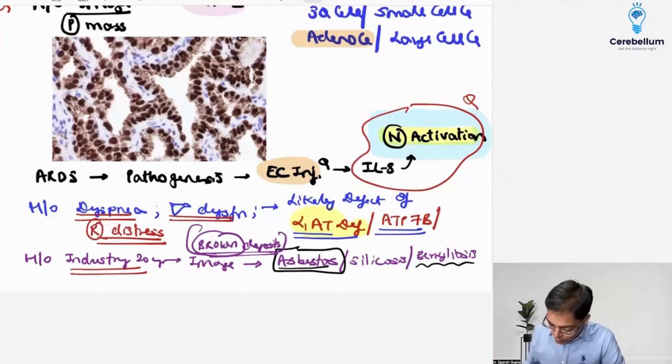Shish kebab appearance was there. Wonderful. So we understand the fact asbestos body, ferruginous body, shish kebab appearance, that's what is going to be seen in a patient suffering from asbestosis only.